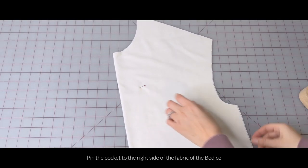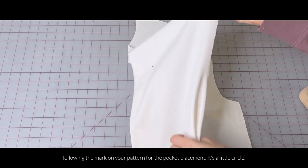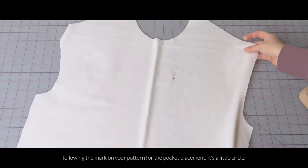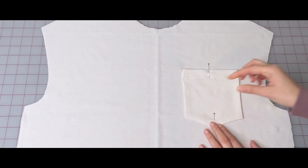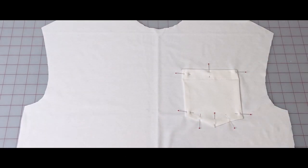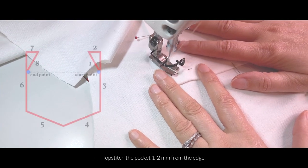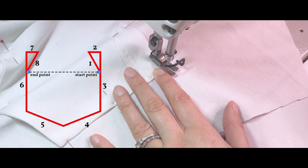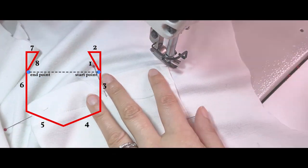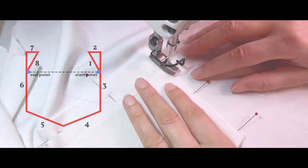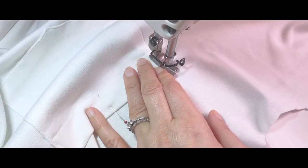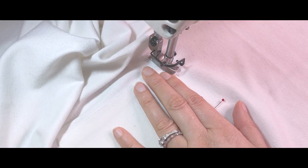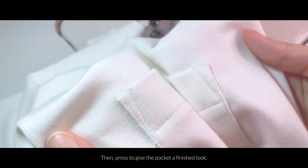Pin the pocket to the right side of the fabric of the bodice, following the mark on your pattern for the pocket placement. It's a little circle. Topstitch the pocket 1-2mm from the edge. Here's a little diagram of how I did it. Then press to give the pocket a finished look.